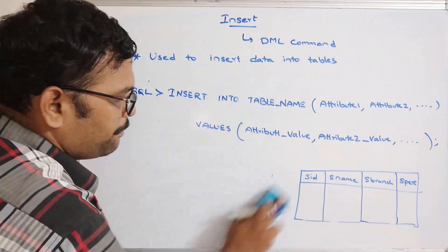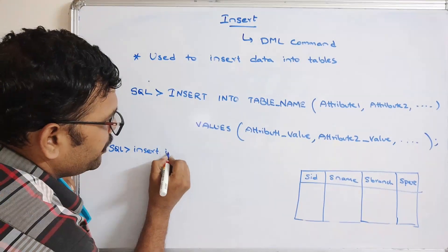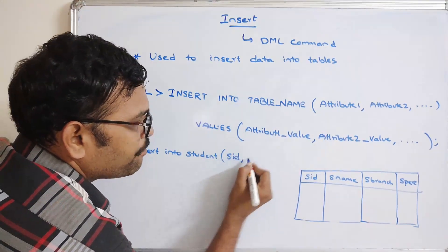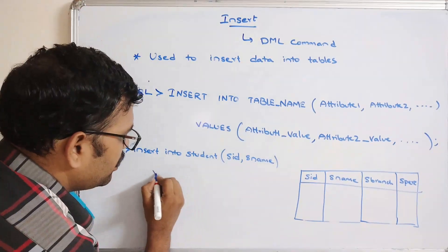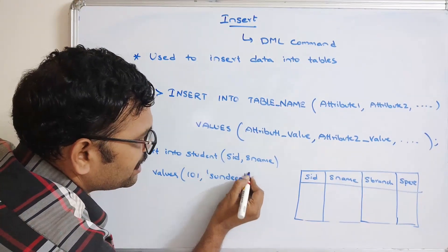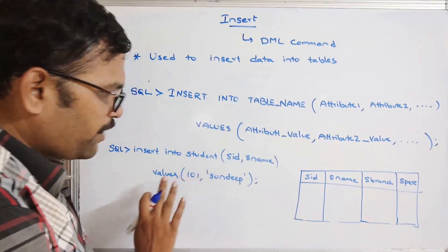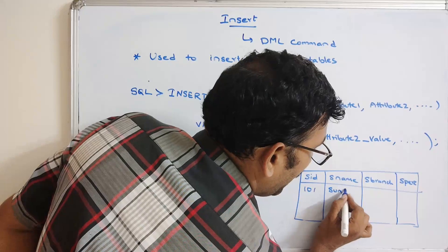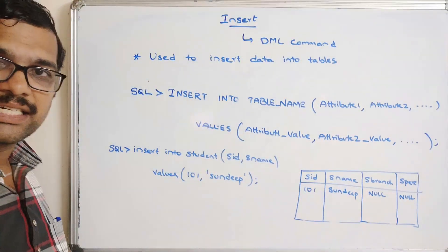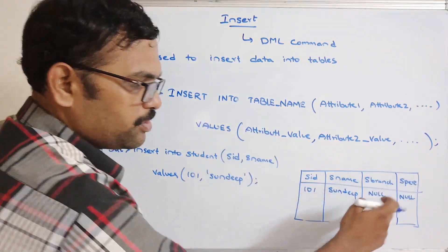For example: INSERT INTO student (s_id, name) VALUES (101, 'sandeep'). Here we are passing values for only two attributes. Since 'sandeep' is a varchar it must be enclosed in single quotes. After executing this, we get 101 and sandeep, and the remaining attributes — branch and percentage — will be NULL by default, because no constraint has been set.